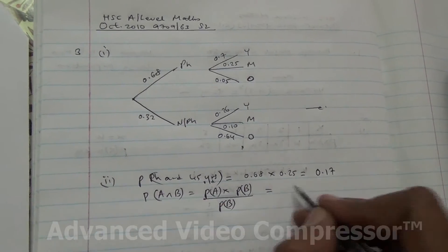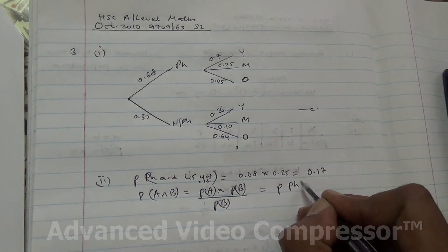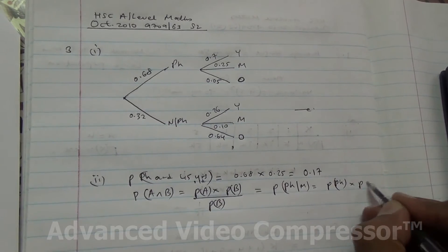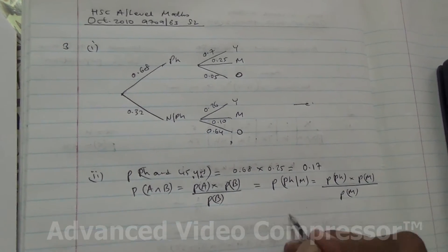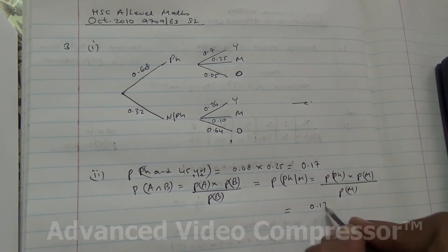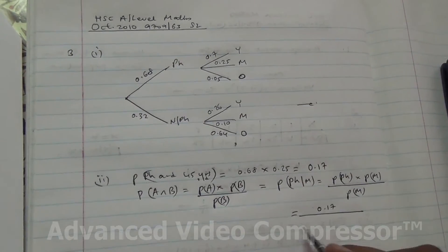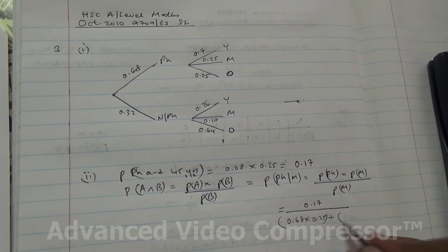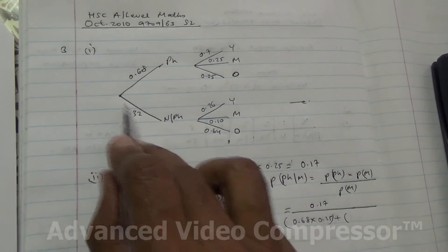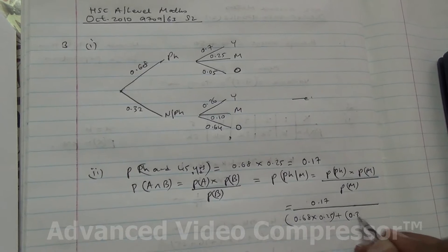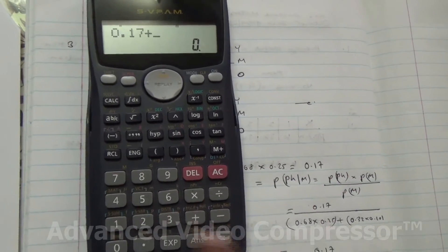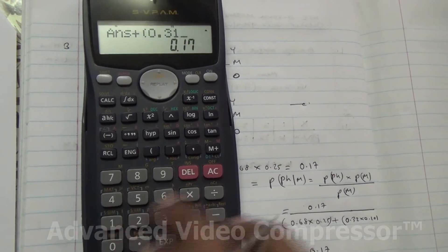Therefore, the probability that he's using a cell phone and is of middle age is the numerator: 0.17. The probability that he's of middle age is going to be 0.68 times 0.25 — because he's of middle age and using a cell phone — plus 0.32 times 0.10 for not using a cell phone but of middle age. So we have 0.17 divided by 0.17 plus 0.32 times 0.10.